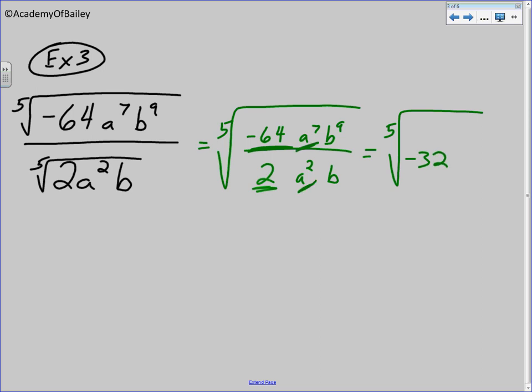a to the seventh divided by a squared is a to the fifth. Well, look at that. Five and five, that's exciting. And b to the ninth divided by b to the first should be b to the eighth. There were eight more b's on top, so that's the reason why it's on top of the fraction bar now.